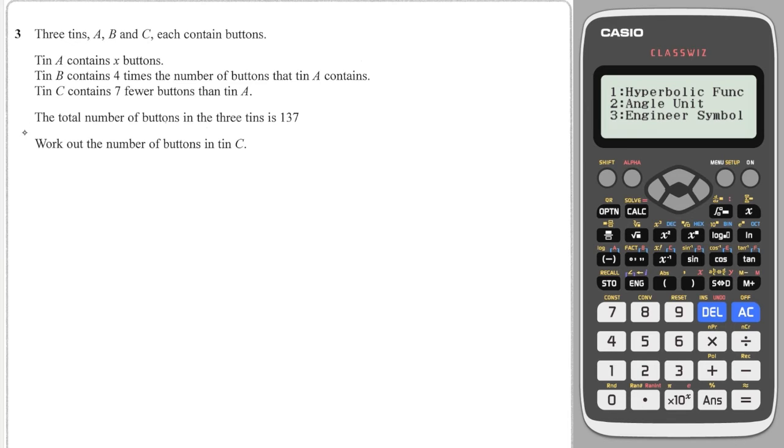Now we move on to questions you have to form yourself. We have tin a has x buttons, and tin b has 4 times the number of buttons than tin a, and tin c has 7 fewer than tin a. So they already give you an algebraic expression for one of the tins, so that's x is tin a. And it says work out the total number of buttons in the three tins. Also, the total number of buttons in the three tins is 137. Work out the number of buttons in tin c. So we know the total is 137. And we know that tin a is x. Tin b is 4 times the number of tin a, so it's 4 times by x. And tin c is 7 fewer, so it's x minus 7. And all of those three added together makes 137.